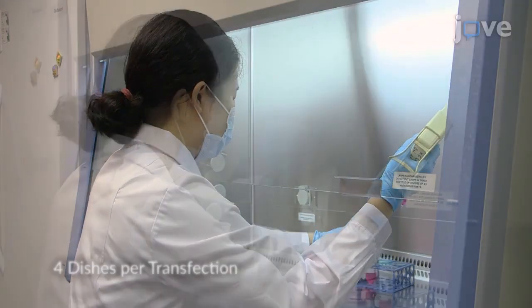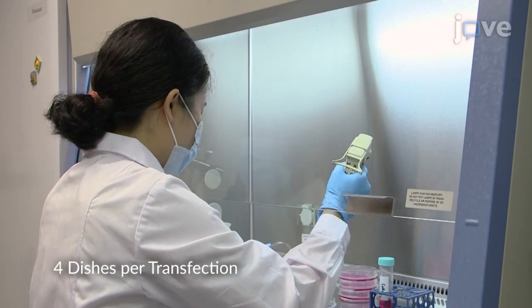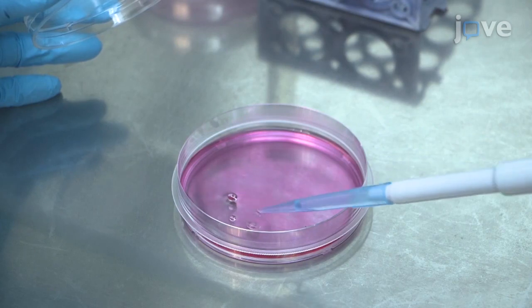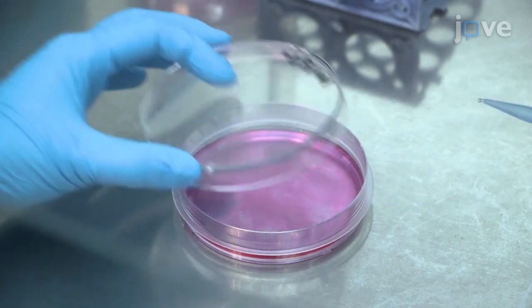To begin, plate 2 x 10⁶ cells in a 100 mm culture dish. On the next day, transfect the cells with lipofectamine according to the manufacturer's instructions.